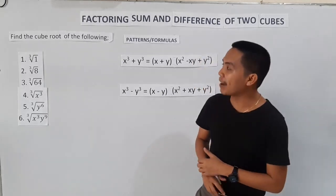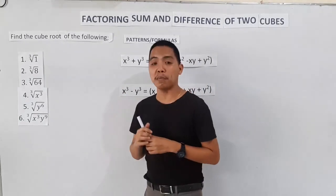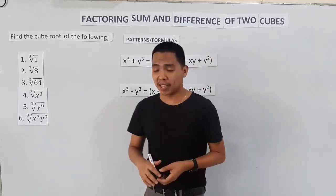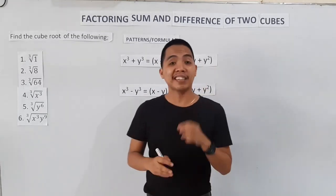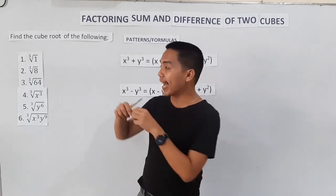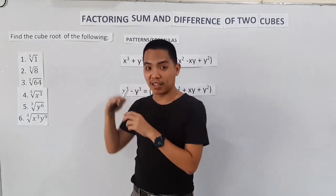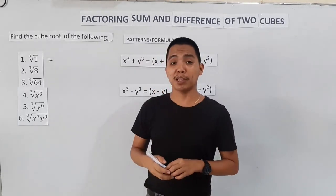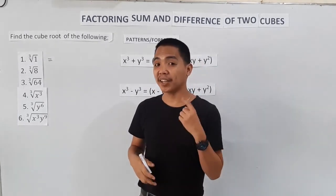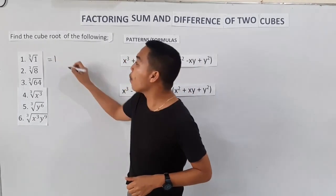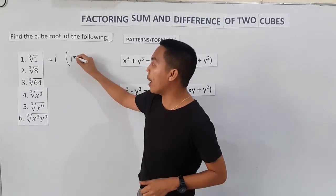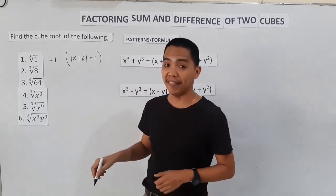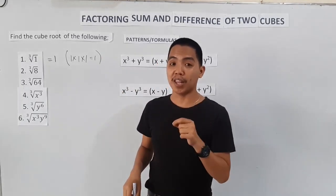Let us first find the cube root of the following. A cube root is when you multiply three numbers and then the answer will be the given. Example number one: What is the cube root of one? The answer is one. Because one times one times one is equal to one. That's why the cube root of one is one.